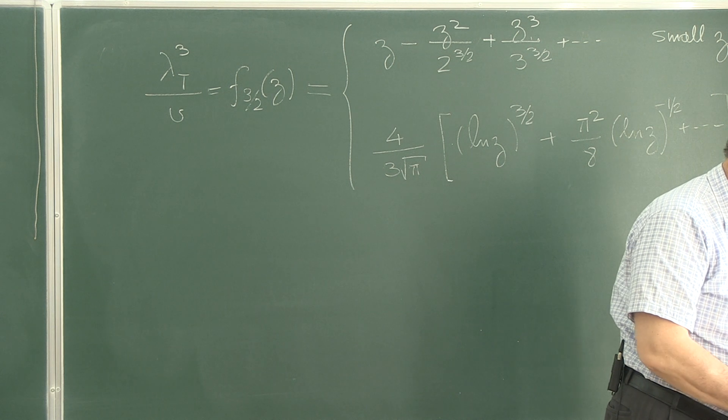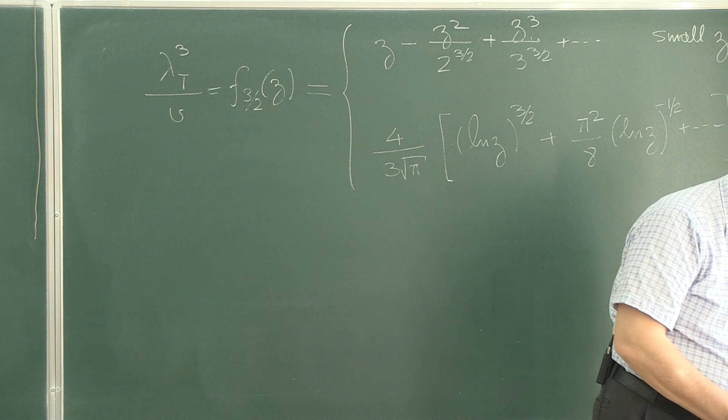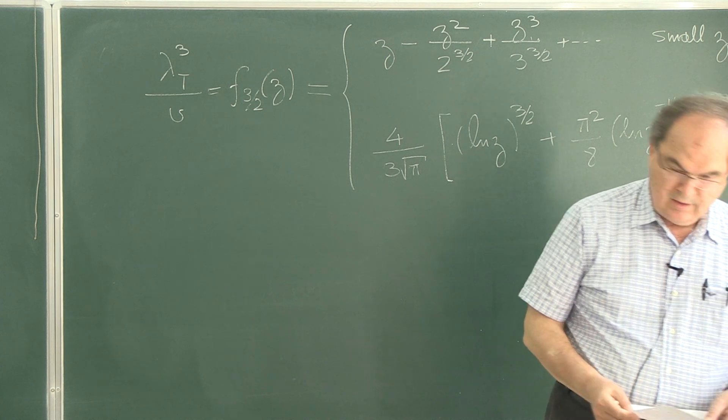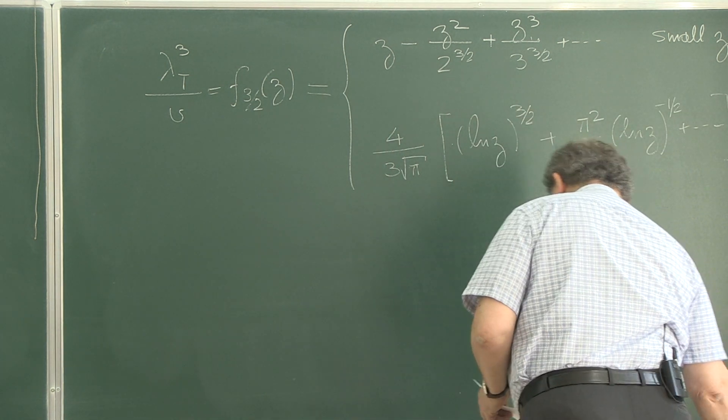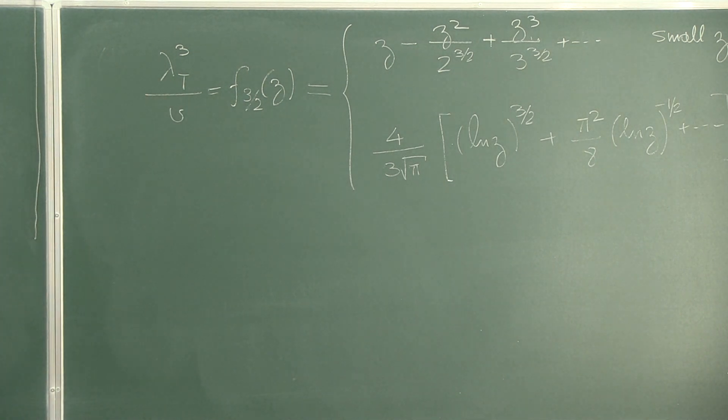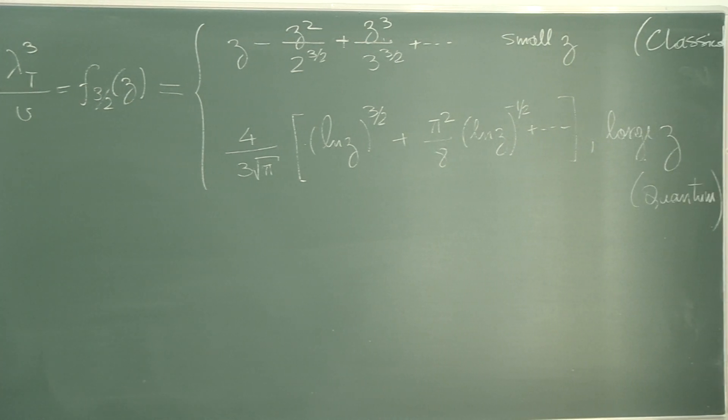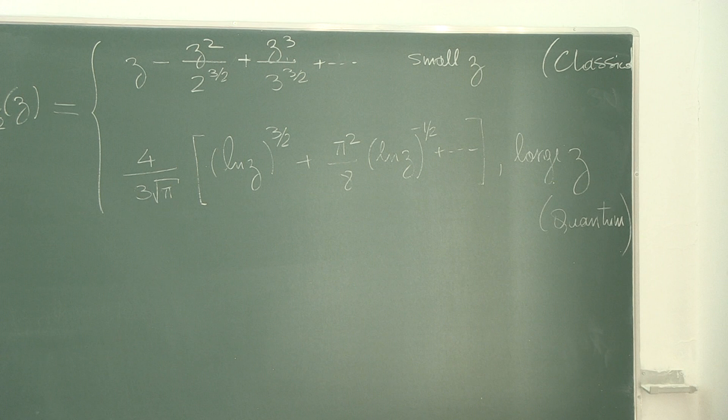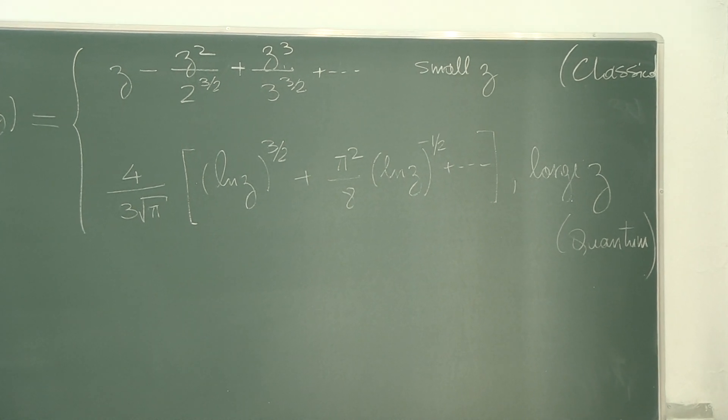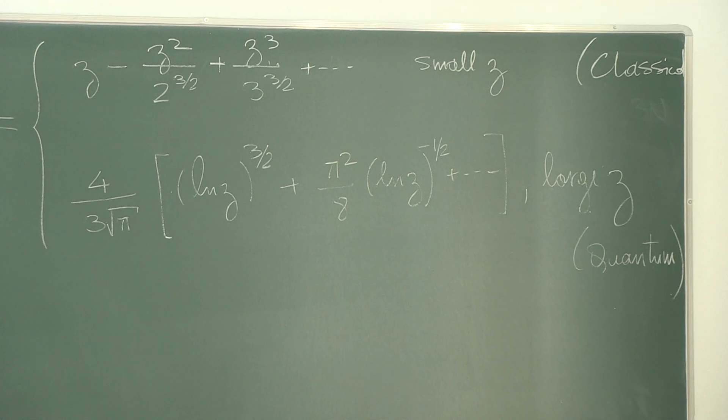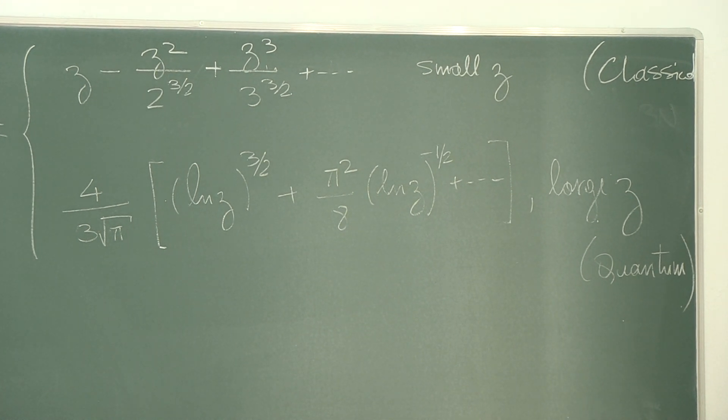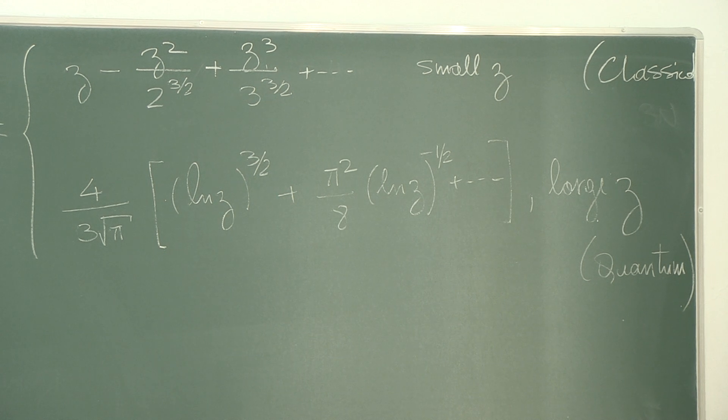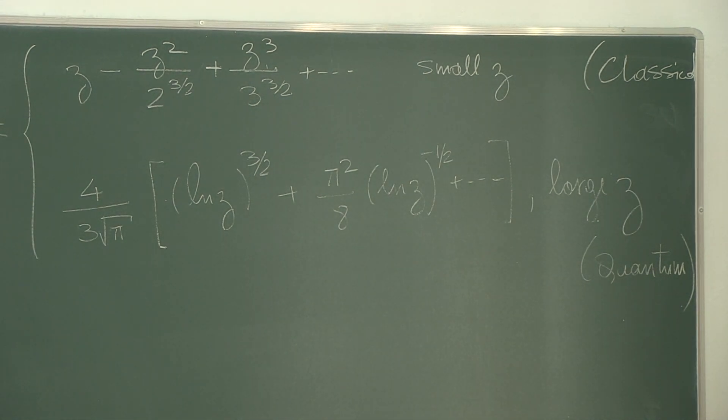You have the notes with you. In the classical limit, we have the following. High z, low densities, that means classical limits. Small z.